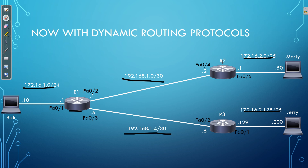R2 is like: you've just told me about these networks over here, and you're telling me I can reach them through you — I'm going to add routes to my routing table saying that to reach these networks, I have to go through you. Then R2 does the same thing in return — R2 tells R1 about the networks it knows about. R1 believes R2 and adds those routes to its routing table.